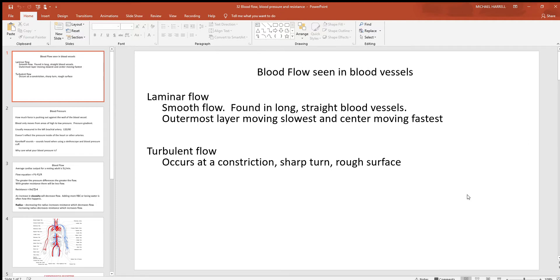Let's take a look at blood flow and blood pressure. Now let's think about the blood flow that you can see in different blood vessels of the body. There's basically two different types, laminar and turbulent.